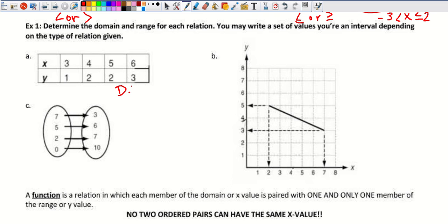So for the first example here, we're determining the domain and range of each relation. We can write a set of values or an interval depending on the type of relation we're given. So this would be our domain, is the set of x such that x is equal to, and it's just points, so three, four, five, and six. This is a function, by the way, because there's no repeated x values. It's not one-to-one, though, because there is repeated y values. So the set of y such that y equals one, two, two, and three. And we're using points here. We're using these as a set because we don't have numbers in between three and four.